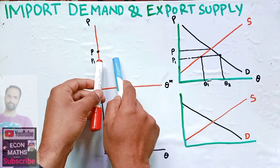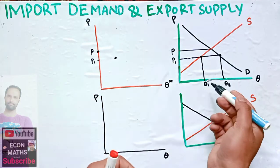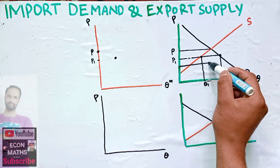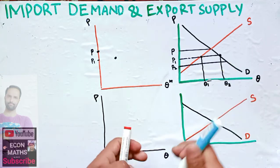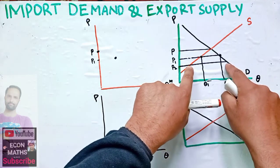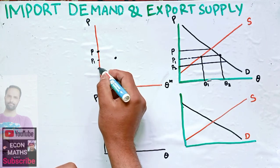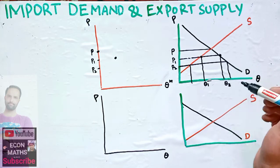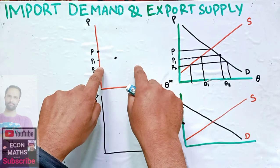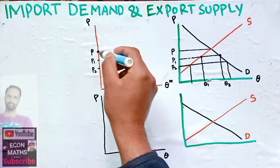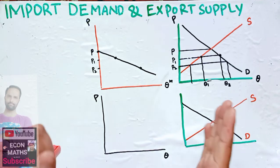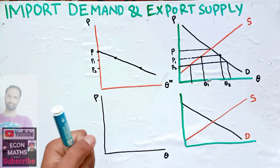We translate this distance — the excess demand gap — to the import demand graph. Corresponding to price P1, we plot that import quantity. Similarly, if price is P2, we find the corresponding excess demand and translate that distance as well. When we join these different price-quantity combinations, we get the import demand schedule.